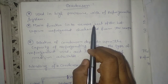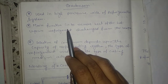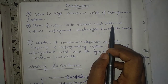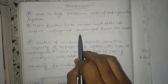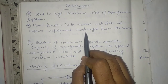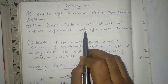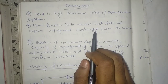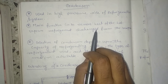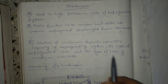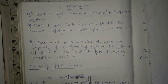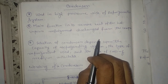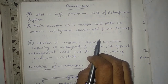The main function of the condenser is to remove heat from the hot vapor refrigerant discharged from the compressor. That vapor refrigerant is allowed to cool in the condenser. The hot vapor refrigerant contains heat absorbed by the evaporator plus the heat of compression added by the mechanical energy of the compressor motor.